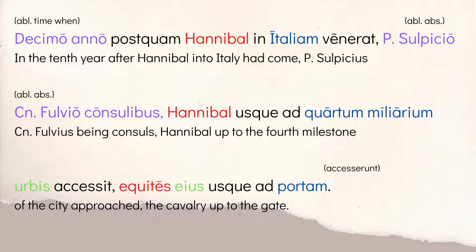The chapter opens: Decimo anno postquam Hannibal in Italiam venerat, Publio Sulpicio Gnaeoque Fulvio consulibus, Hannibal usque ad quartum miliarium urbis accessit, equites eius usque ad portam. It's a long sentence, but it's giving you a lot of timing words and setting the stage of when things are happening.